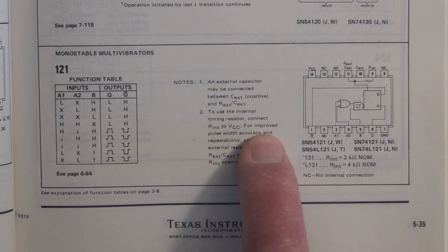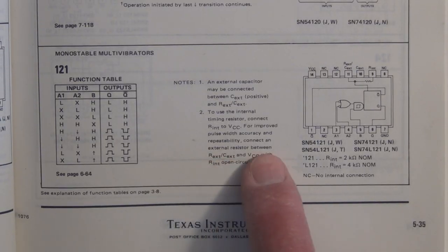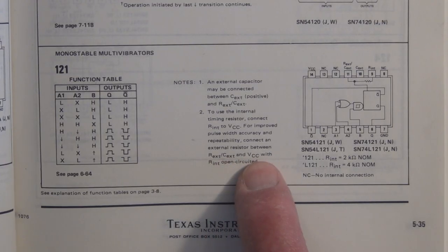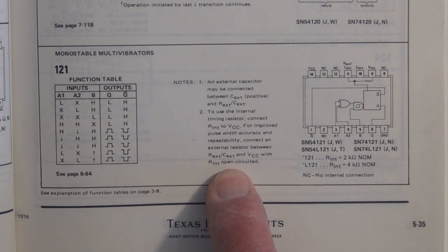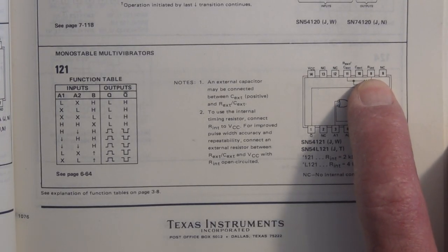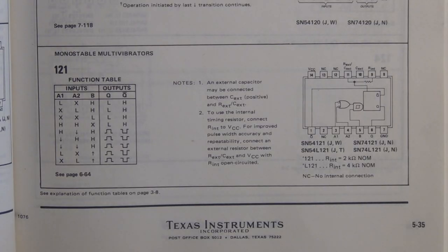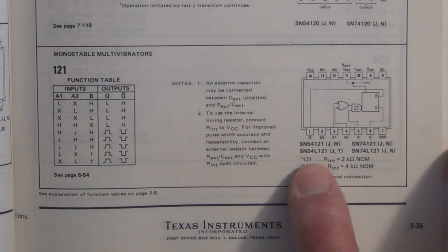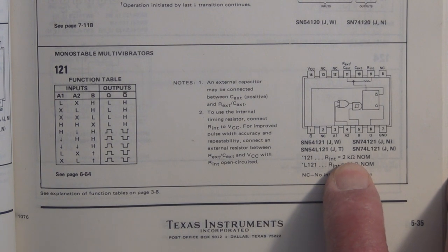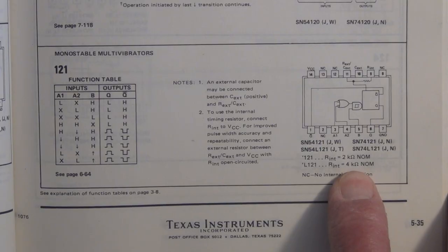And they give you the pin out to achieve that. It says here to use the internal timing resistor connect R internal pin to VCC. For improved pulse width accuracy and repeatability connect an external resistor between R external/C external and VCC with the internal open circuited. So you would not connect anything to R internal if you're using an external resistor and that's what I did. So here we have the 74-121 has an internal resistor of 2k and the L-121 has an internal resistor of 4k.